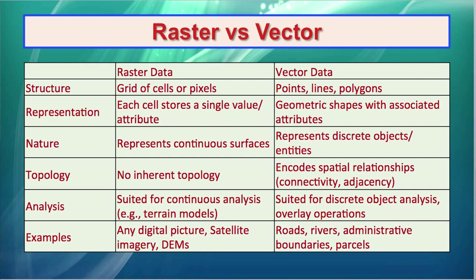Then, regarding topology — it encodes spatial relationships, which I will discuss in detail. For analysis, raster data is suited for continuous analysis while vector data is suitable for discrete analysis. Satellite images and Google Earth are examples of raster data. The geometric features we create in a GIS environment — such as roads, lines, points, and areas — will be your vector dataset.